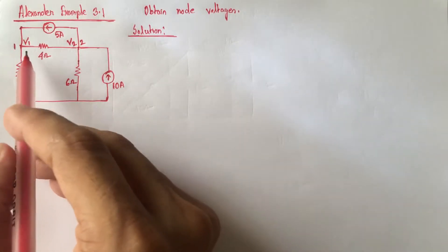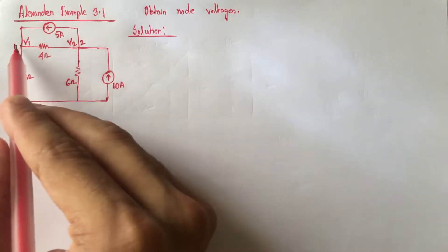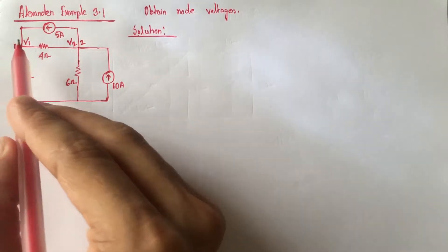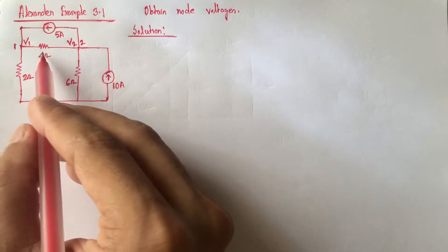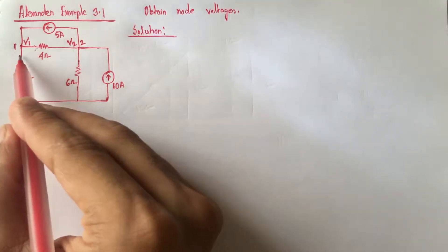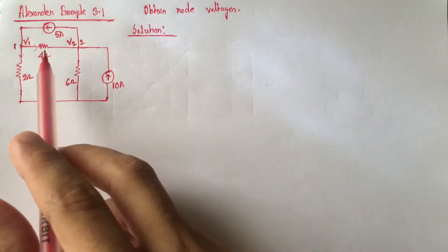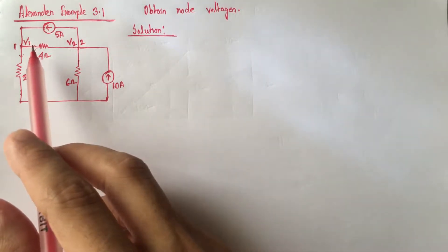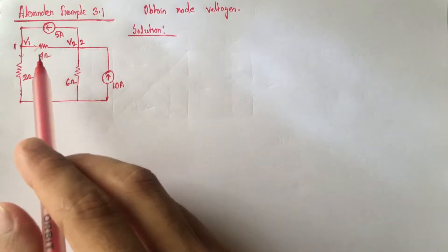Now from node 1 we see that 5A current is flowing towards node 1. The direction of current flow for this path and for this path are not given. So for solving the circuit we can assume the direction of current flow through these paths as our wish.